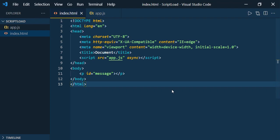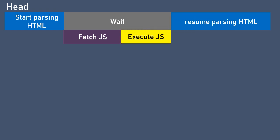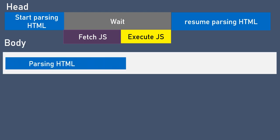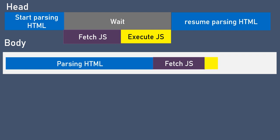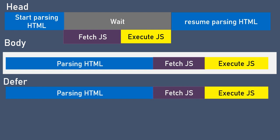Now let us discuss the four scenarios. With the script in the head: the JavaScript is loaded first, then executed, then only the parsing of HTML takes place. With the script before the closing body tag: HTML parsing takes place first, then downloading and execution of JavaScript. Defer is almost the same as placing the script before the closing body tag — it waits for HTML parsing, then downloads and executes the JavaScript. With async, it fetches the JavaScript asynchronously.